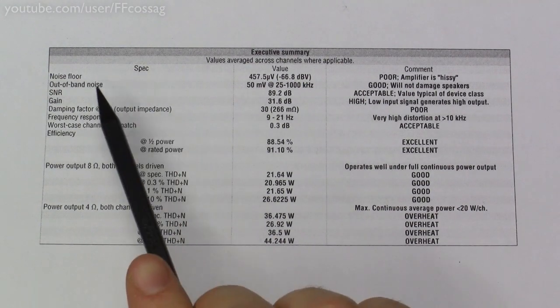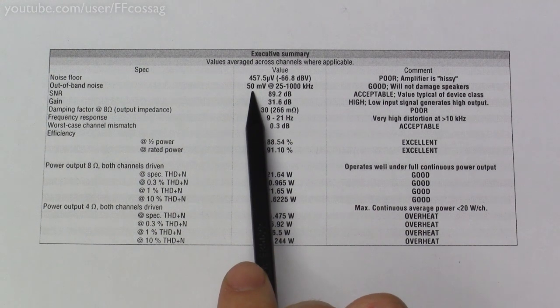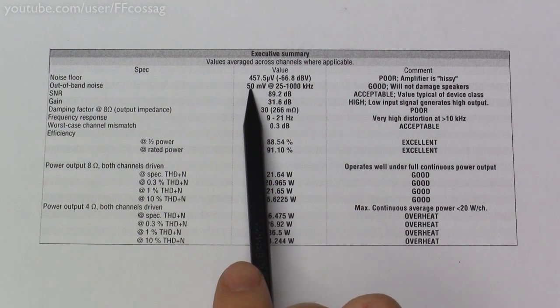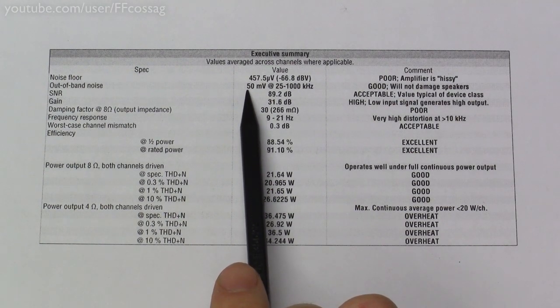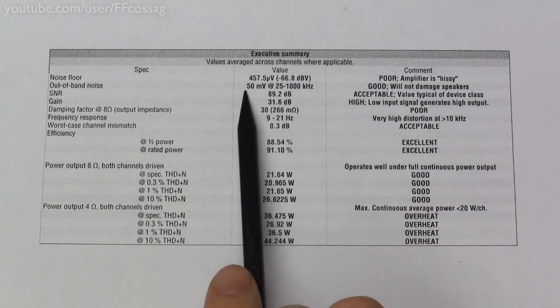The out of band noise, which is the amount of crap a class D amplifier puts out above the audible spectrum, i.e. stuff you cannot hear, but still comes out through your speakers, is about 50 millivolts. And that's an acceptable figure. If you have too much out of band noise, you could actually damage your speakers, but this is acceptable by far.